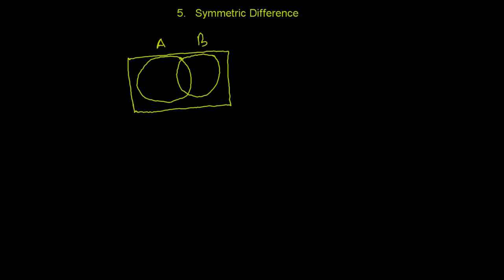Symmetric difference means those sections — those sections of A difference B. So what does A difference B represent? A difference B means the region found in A but not in B. That section is A difference B. And another one, B difference A — B difference A means found in B but not found in A. This is the region that is B difference A.